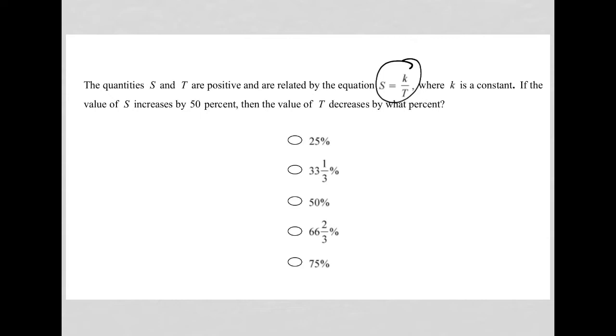If the value of S increases by 50%, okay, so this guy's going to go up, then the value of T decreases by what percent? So anytime I see percent increase or decrease, I like to know, well, what's my baseline? Where am I starting?